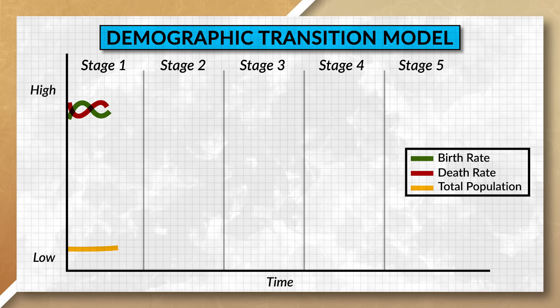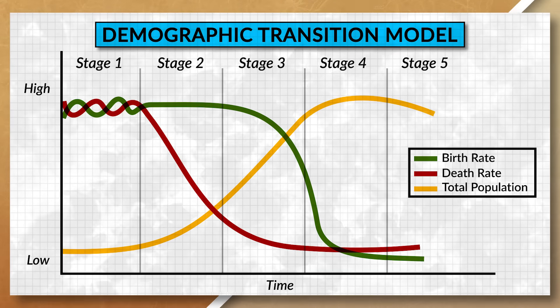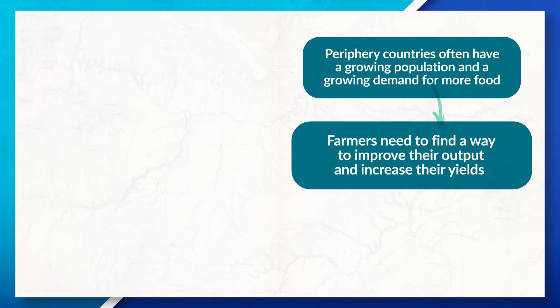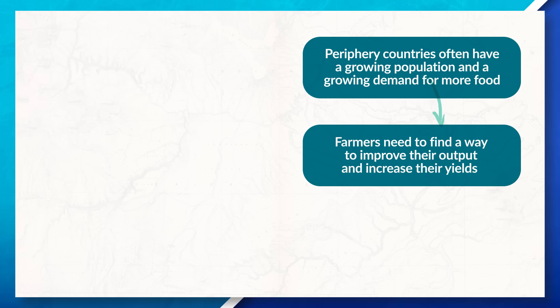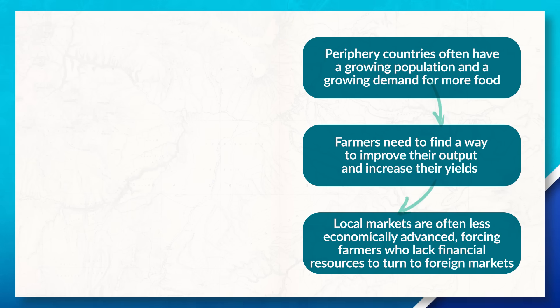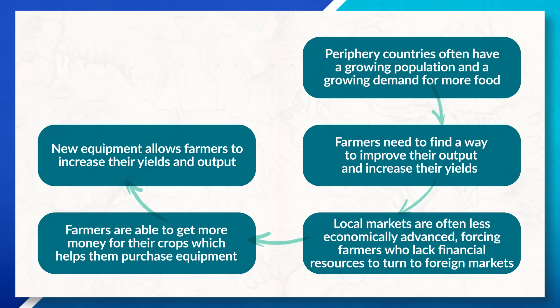However, we often see this exchange disproportionately benefit countries that are more economically developed. Developing countries, especially ones in stage two of the demographic transition model, traditionally have a faster growing population, which increases the demand for food. The problem is that many farmers in periphery countries lack access to modern farming equipment and technology needed to increase their yield and output. So with a growing population driving a growing demand for food, farmers need to find a way to improve their output. Since the domestic market is often less economically developed and farmers have less access to capital, we see farmers turn to other markets — exporting more crops to developed countries to earn more money, which allows them to purchase new farming equipment.